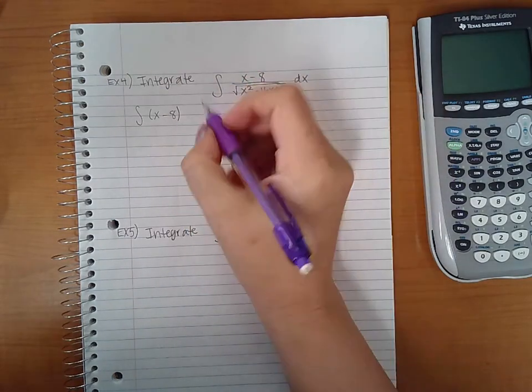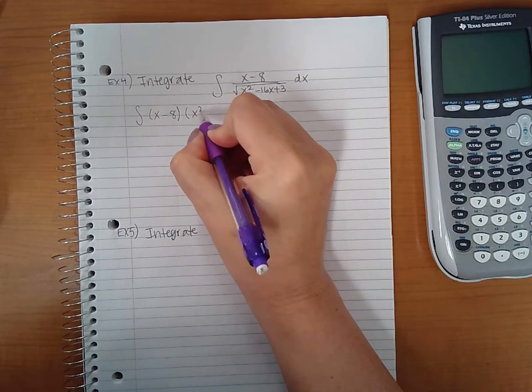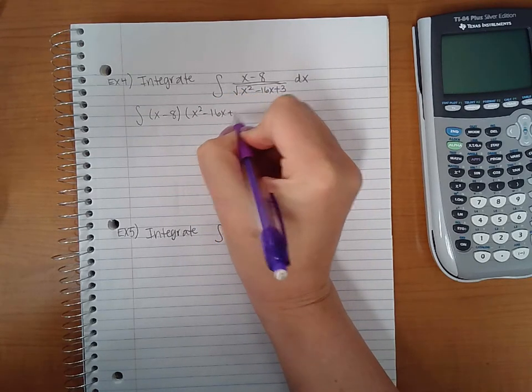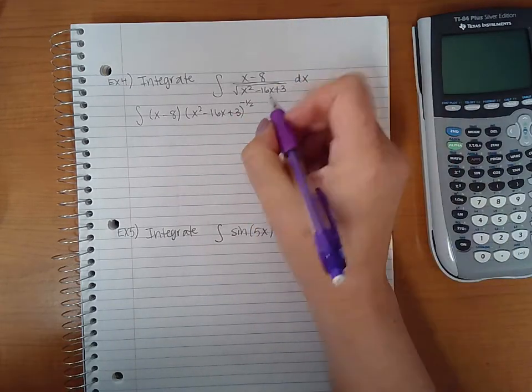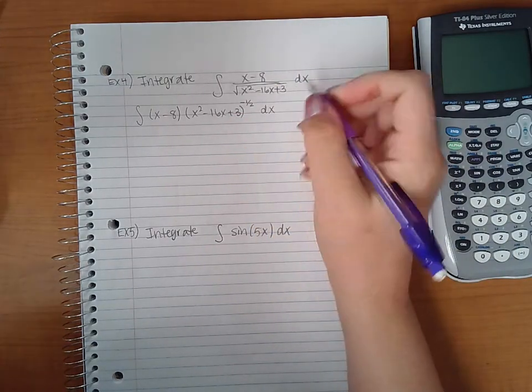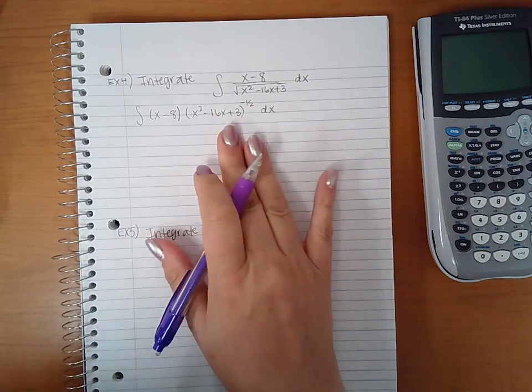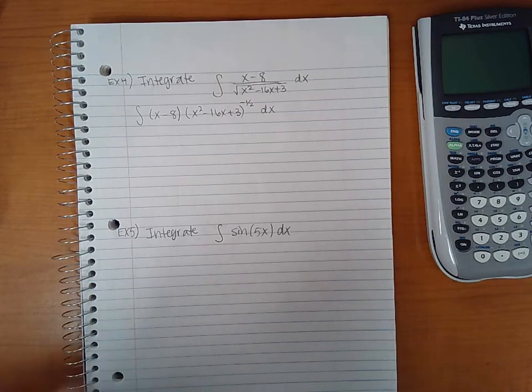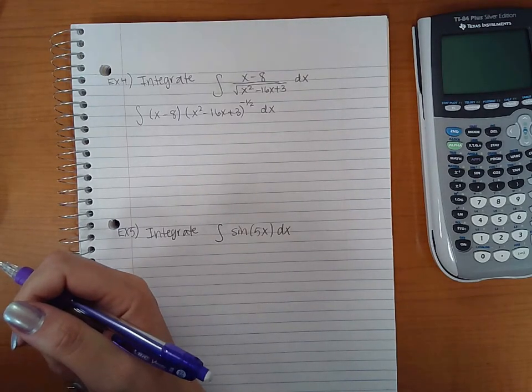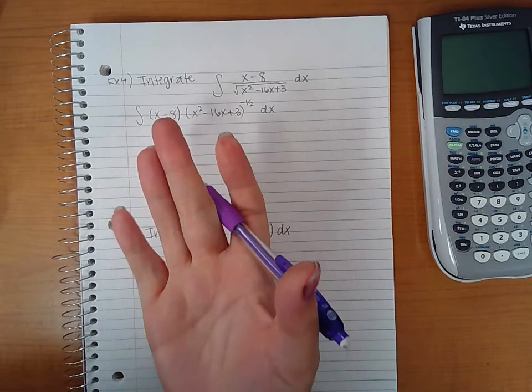This expression will become raised to the one-half power for the radical, but negative because it's down in the denominator. This gets a little bit complicated because you've got two expressions in parentheses, so how do you know which one to let u equal?